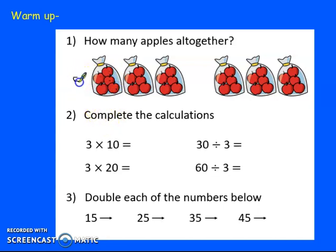There are 5 apples in each bag and there are 1, 2, 3, 4, 5, 6 bags. So we want to know 5 lots of 6 bags. How much does that equal? 6, 12, 18, 24, 30. Well done. Have you got that correct?